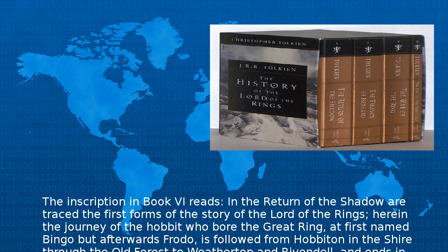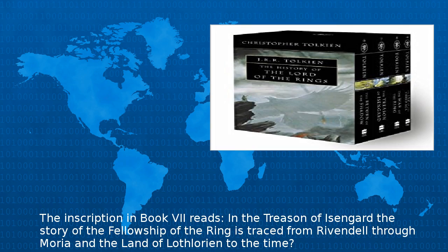The inscription in Book VI reads: In The Return of the Shadow are traced the first forms of the story of The Lord of the Rings, here in the journey of the Hobbit who bore the Great Ring — at first named Bingo but afterwards Frodo — is followed from Hobbiton in the Shire through the Old Forest to Weathertop and Rivendell, and ends in this volume before the Tomb of Balin, the Dwarf Lord of Moria.